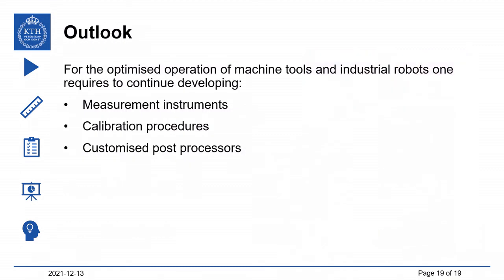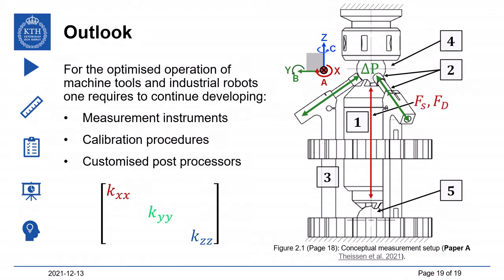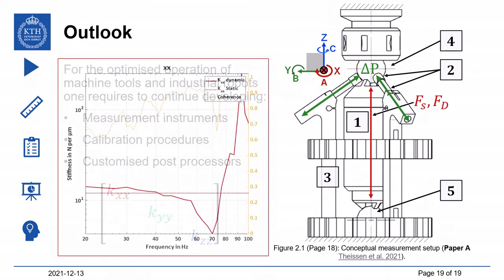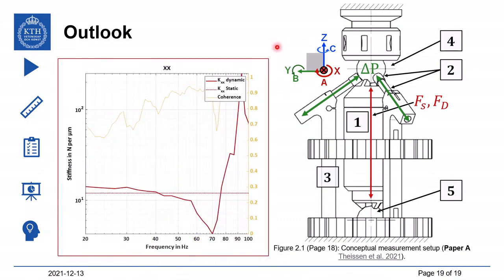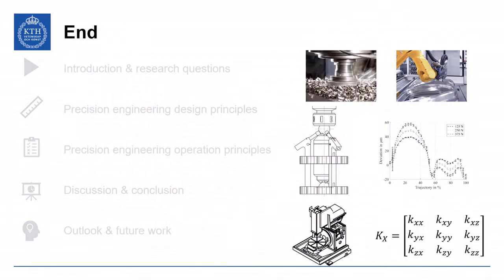Outlook and future work. For the optimized operation of machine tools and industrial robots, one requires continued development of measurement instruments, calibration procedures, and customized post-processes to implement calibrated models of machine tools and industrial manipulators. At the department, we have been focusing on further development of measurement instruments. One example is the dynamic three-dimensional loaded double ball bar, shown in Figure 2.1, which measures Cartesian stiffness not only as a single scalar value, but expresses the Kxx stiffness as a function of the application frequency coming from the cutting force. This concludes today's presentation. Thank you very much for your kind attention.